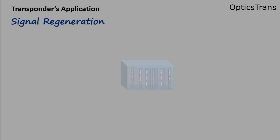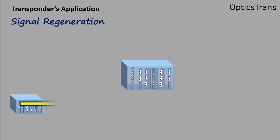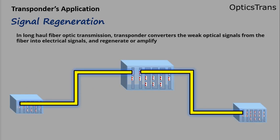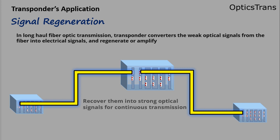Transponders are also used for signal regeneration. In long-haul fiber optic transmission, transponders can also work as repeaters to extend network distance. They convert the weak optical signals from the fiber into electrical signals, regenerate them, and then convert them back into strong optical signals for continuous transmission.